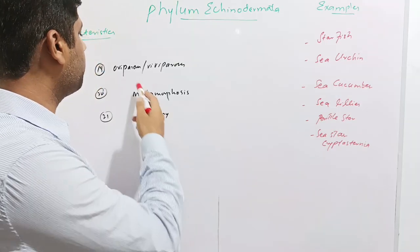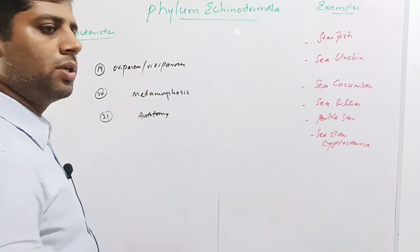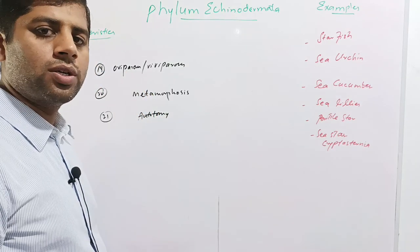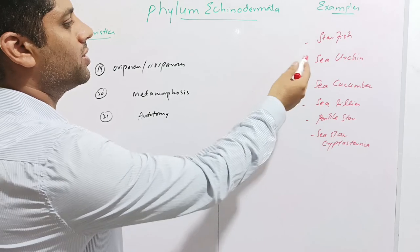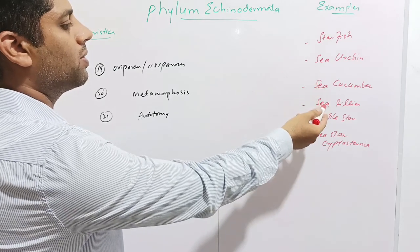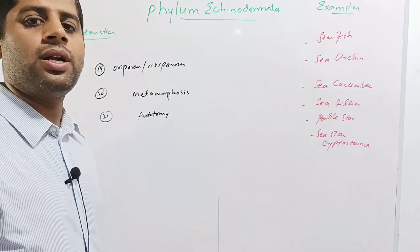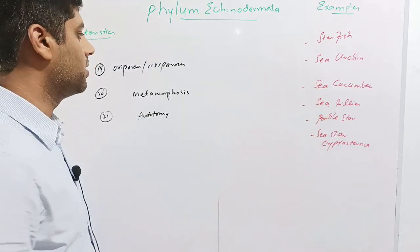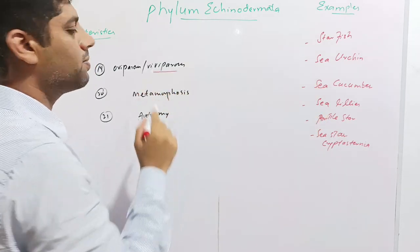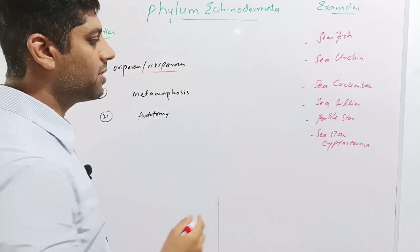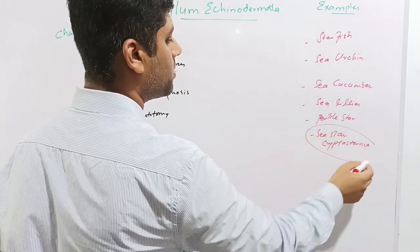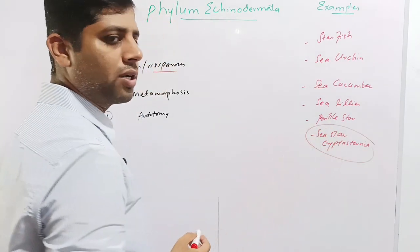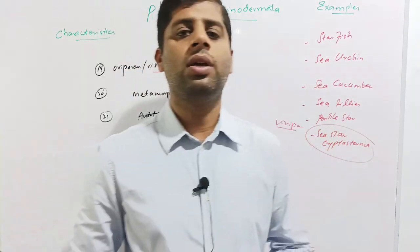Most echinoderms are oviparous — for example, starfish, sea urchin, sea cucumber, sea lilies, and brittle star are all oviparous. Viviparous echinoderms are also present; for example, the sea star cryptosternia is viviparous, meaning they do not lay eggs but give birth to their young ones.